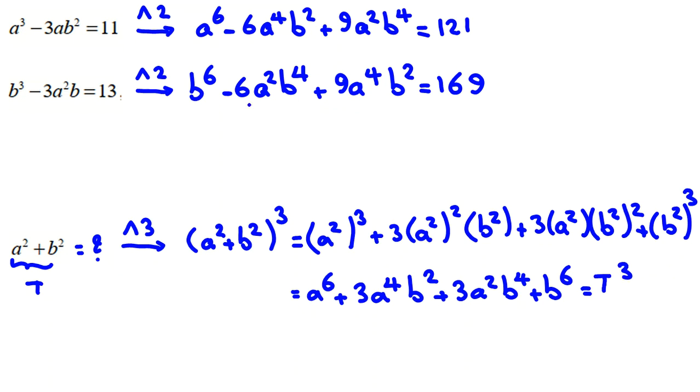Now, here, look, a⁶, b⁶. I have these things, 9a²b⁴. If I add these two terms, it will be a⁴b², double line, a²b⁴, double line.